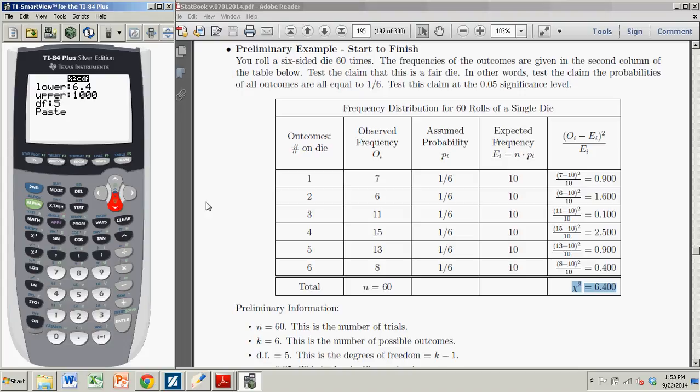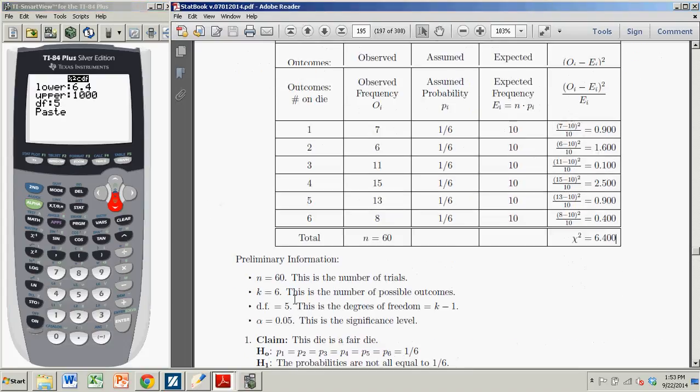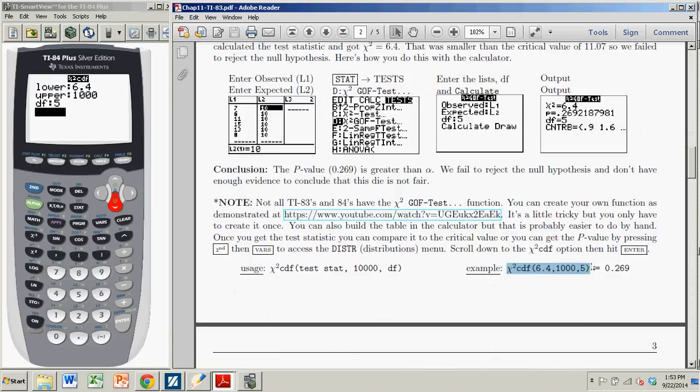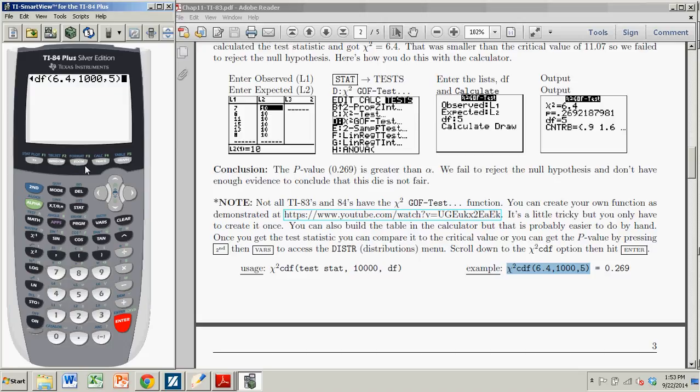What that does is it sticks these values into the chi-squared function that's built into the calculator. Basically, you're just entering the information, and when you say Paste, you're saying paste it into this function. Hit Enter. There's that chi-squared CDF. You don't see it because of all the stuff you put in there, but if you scroll to the left, you can see it. Chi-squared CDF. Hit Enter. Voila. That gives you my p-value, 0.2692. That's what we got using the GOF function.